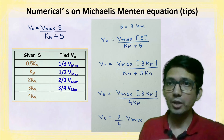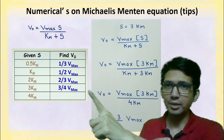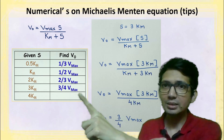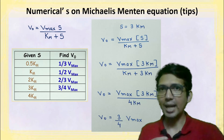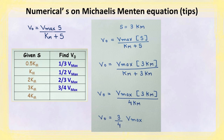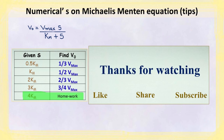If the substrate concentration is 3 km, then the velocity works out to three-quarters vmax, i.e., 3/4 vmax.